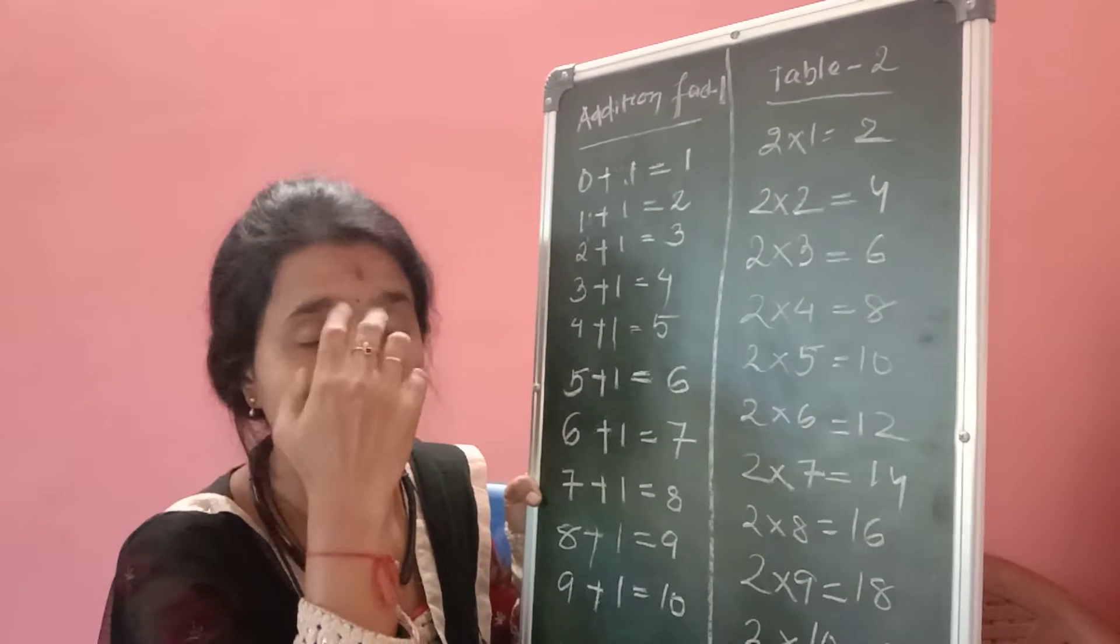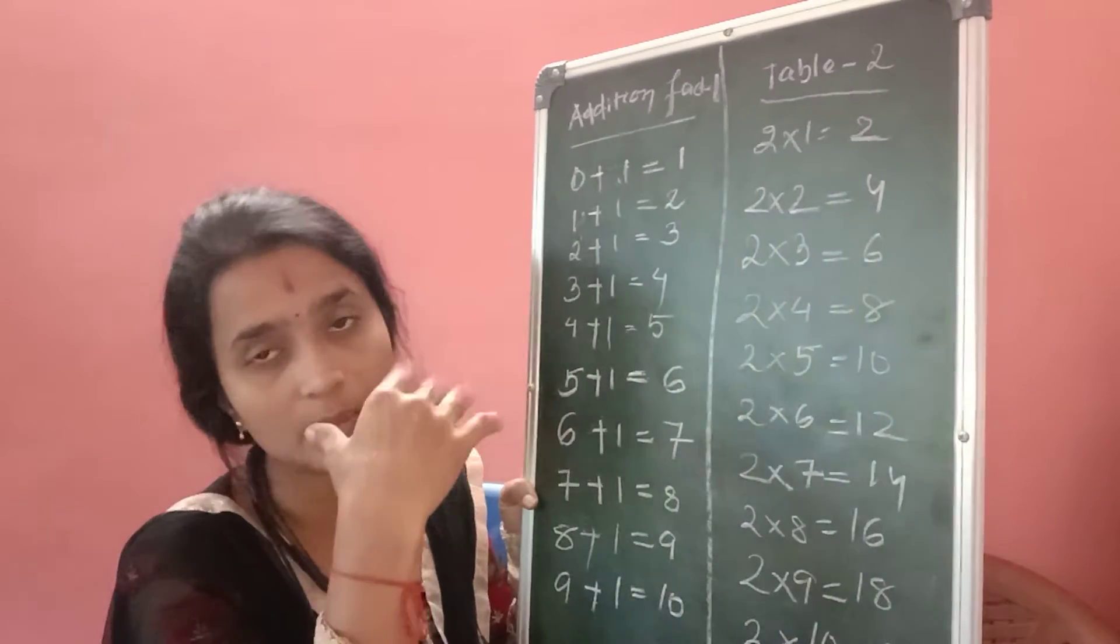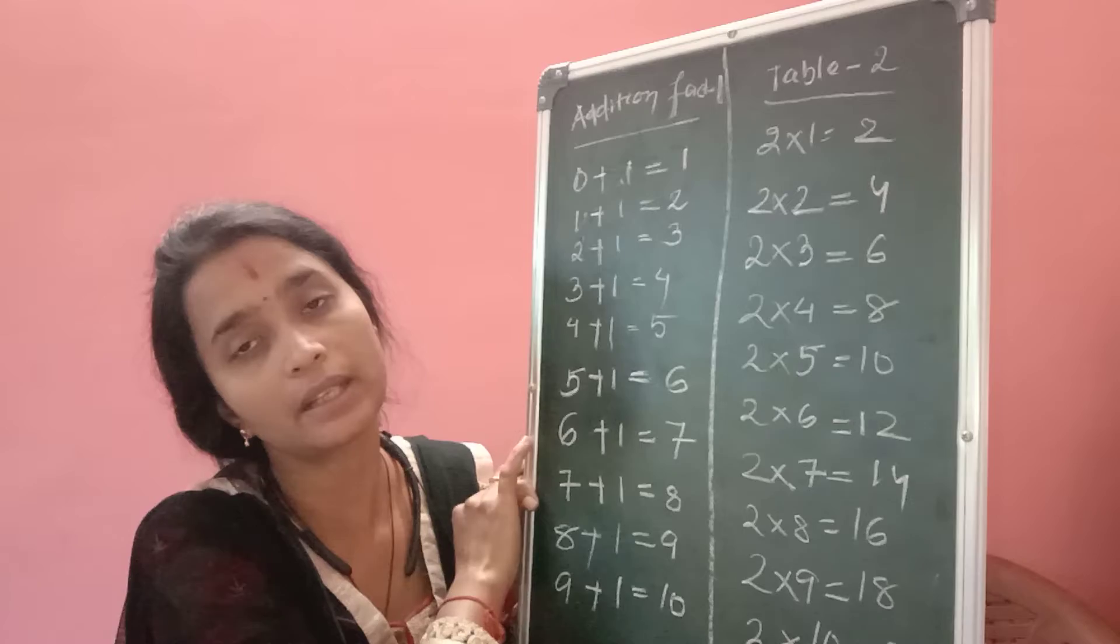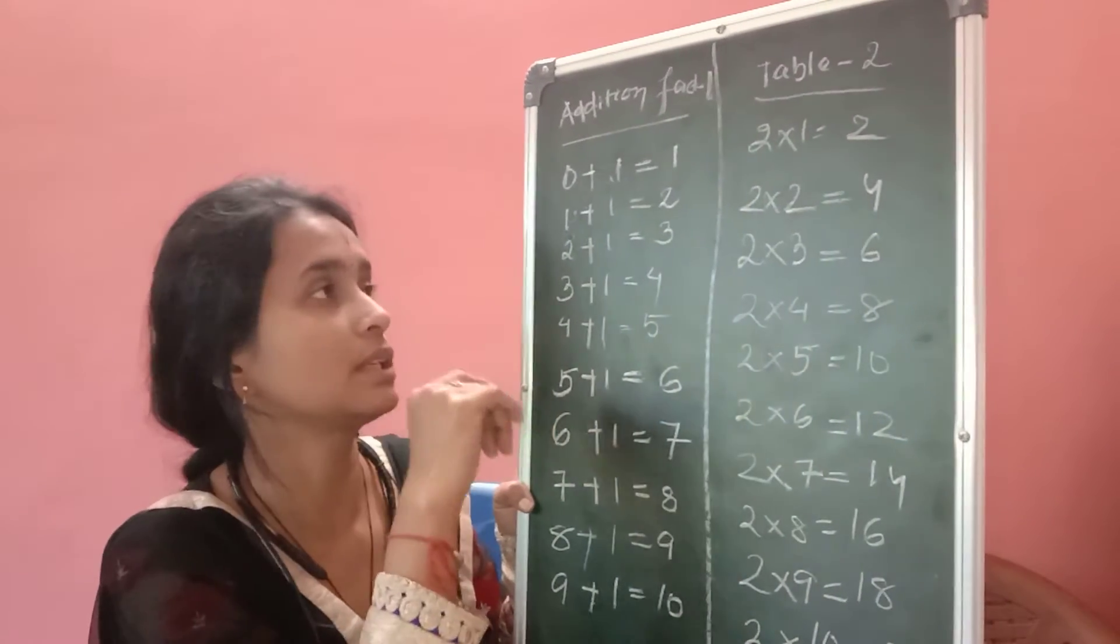In the previous classes I have taught you about one to hundred numbers and spellings, I have taught word and two tables. Today we will study addition fact number one. What is it? If we add one to one number, then what is it?